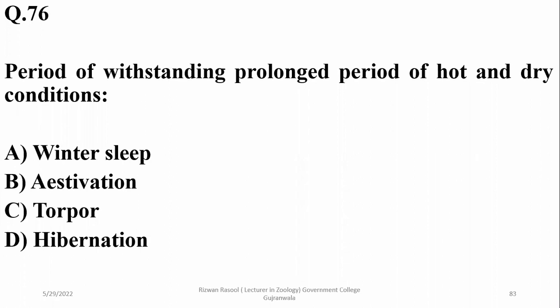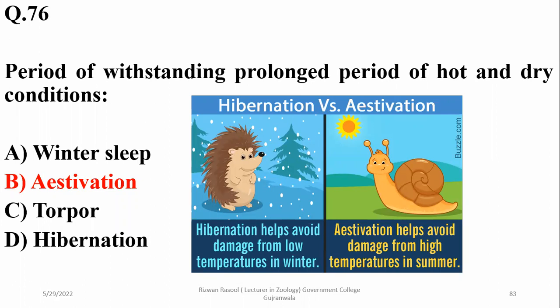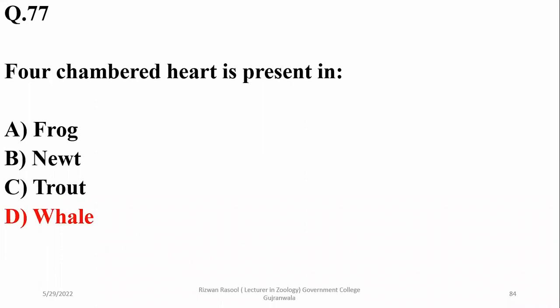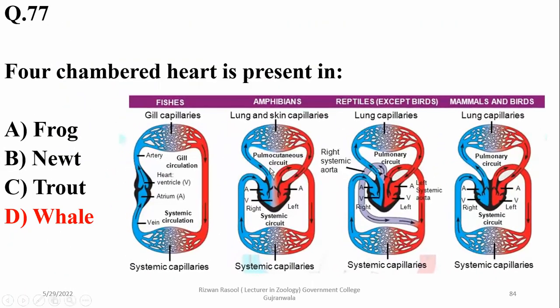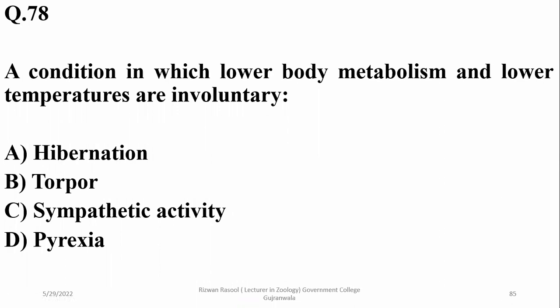Question 76: the ability to withstand prolonged periods of hot and dry conditions is estivation. Hibernation is winter sleep during low temperatures, while estivation protects from high temperatures in summer. Question 77: a four-chambered heart is present in mammals such as whales. The evolutionary sequence is: one-chambered heart in fish, three-chambered in amphibians, incomplete partitioning in most reptiles except crocodiles, and completely partitioned four-chambered heart in birds and mammals.